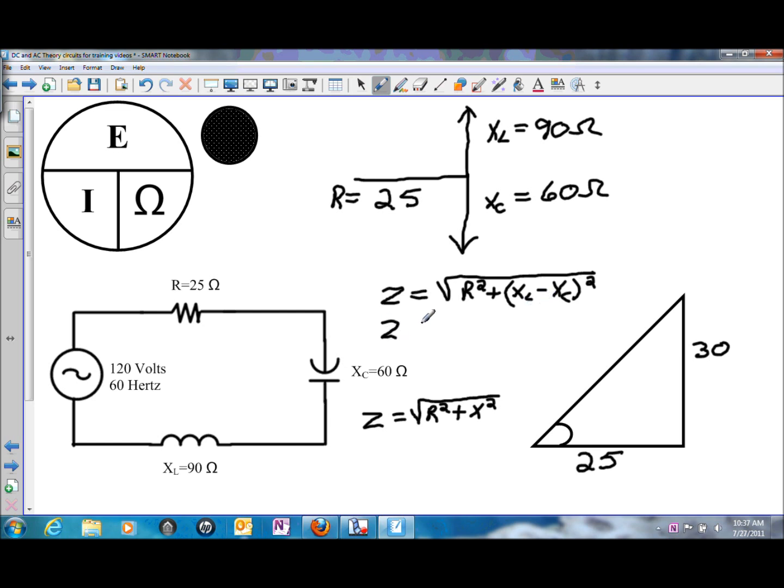So, you could place this in your calculator as the square root of 25 squared, plus the difference of 90 ohms of inductive reactance minus the 60 ohms of capacitive reactance and square that. But, either using the first method that I showed you or the second, the modified version of Pythagorean's Theorem, you will still end up with an impedance of 39.05 ohms.